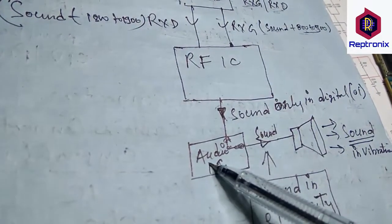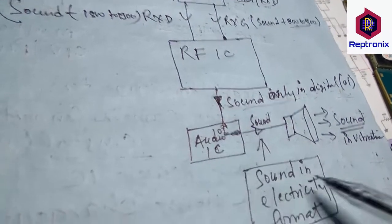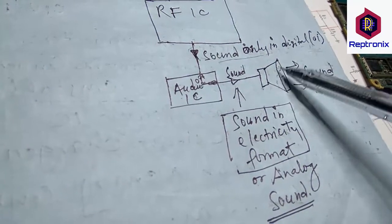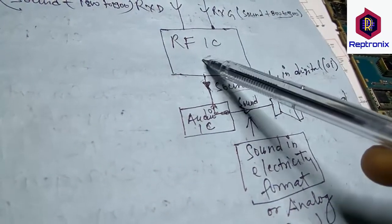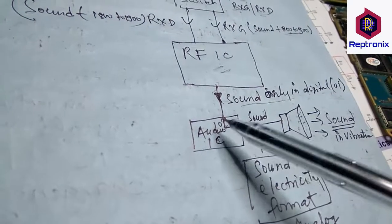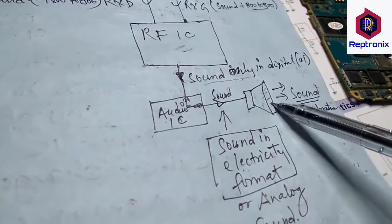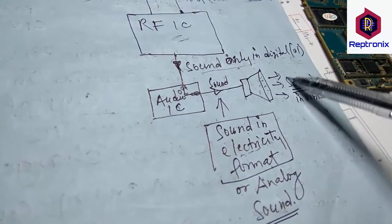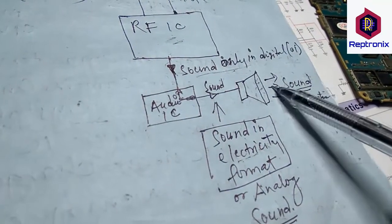The sound signal is then sent to the audio IC. In the audio IC, the sound is in digital format. The audio IC converts the sound from digital format to analog format, because the speaker cannot process digital signals. Audio IC changes it to analog format — which is an electrical signal — and the speaker uses that electrical format to produce vibrations, which we can hear as sound.